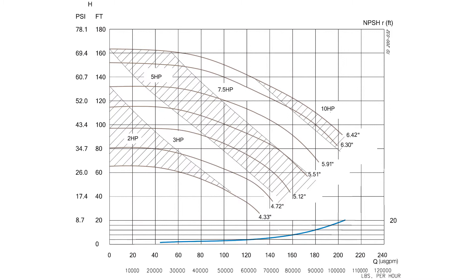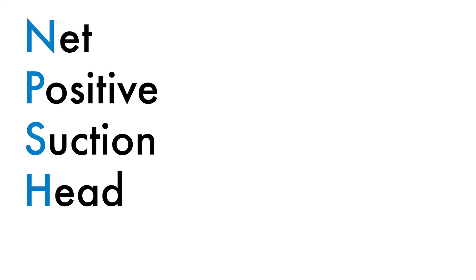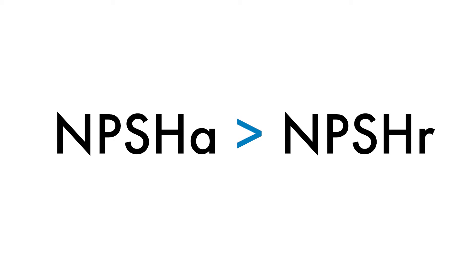The other side of the equation is NPSHA, with an A standing for Available. NPSHA is determined by the process piping. You always want NPSHA to be greater than NPSHR.